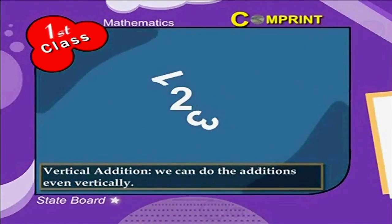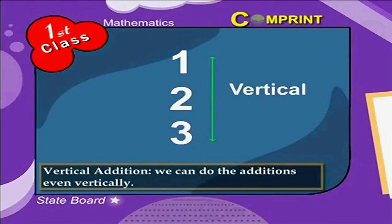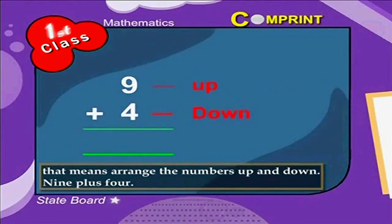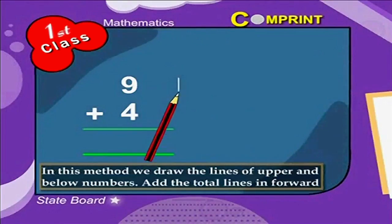Vertical additions. Children, we can do the additions even vertically. That means arrange the numbers up and down. Here is an example for you. Nine plus four. In this method, we draw the lines of upper and below numbers.